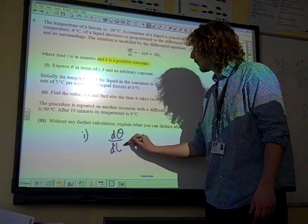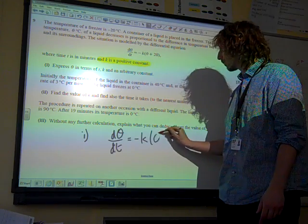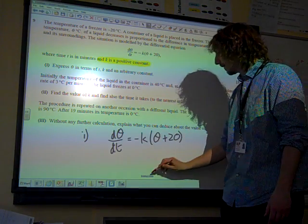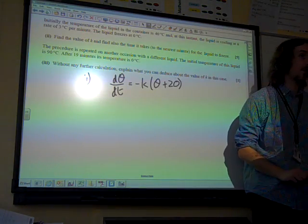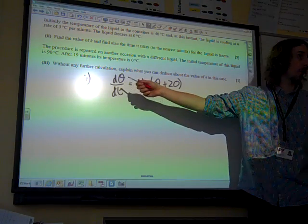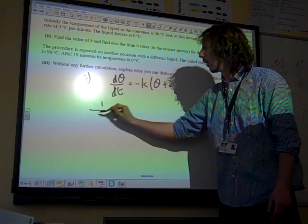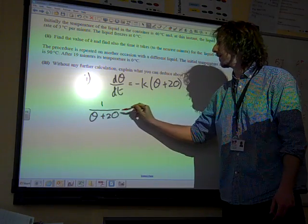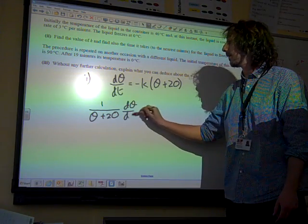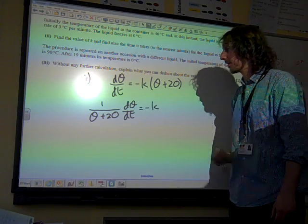If we're going to do that, we need to have everything involving θ on the left, because dθ is on the top there, and everything not involving θ on the right. So we're going to have 1/(θ + 20) dθ/dt = -k. Okay, now we're going to integrate both sides with respect to t.